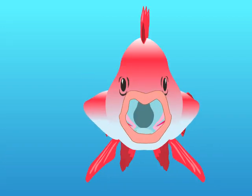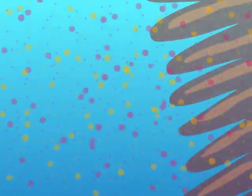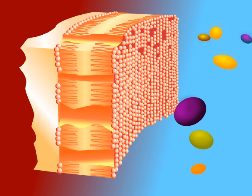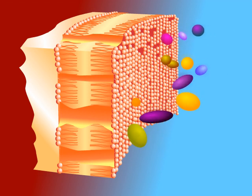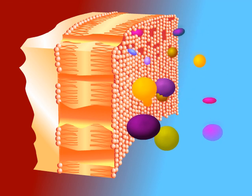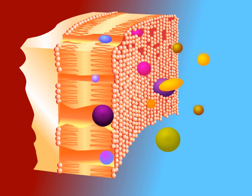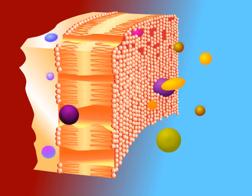Fish breathe by absorbing oxygen from water through their gills. If present, certain chemicals can also pass through the thin skin of the gills and into the fish, and a small amount of chemical may also absorb through the fish's outer skin. This cartoon shows the magnified surface of fish gills. Notice that some of the chemicals enter the cell membrane and go into the fish.